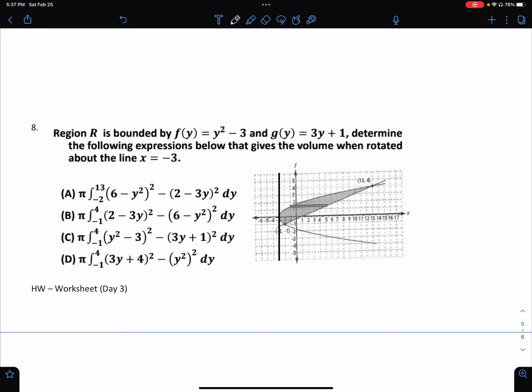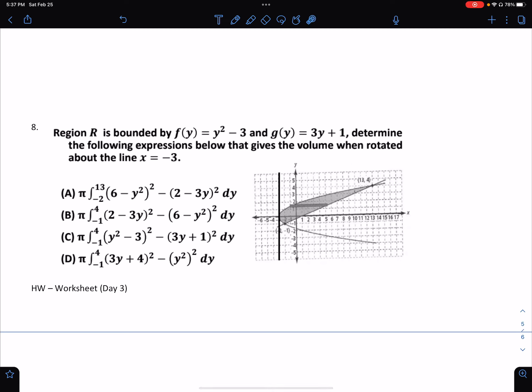It says region R is bounded by the parabolas. So x = y² - 3, and g(y) = 3 - y. Now notice we are in terms of y. So if we're in terms of y, therefore we're looking at a horizontal rectangle. And we want to determine which of the following expressions can give us the volume when we revolve it about x = -3. And there's x = -3 right there. There's our axis of revolution. I'll put my little curly Q in there.